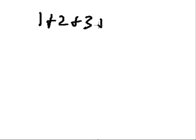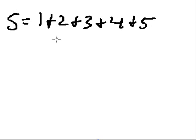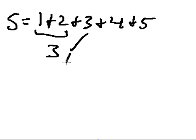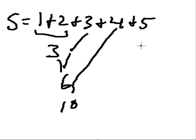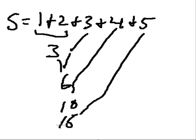I want to add up all the numbers from 1 to 5: 1 plus 2 plus 3 plus 4 plus 5. I'll say s is equal to this. 1 and 2 is 3, plus 3 is 6, plus 4 is 10, plus 5 is 15.